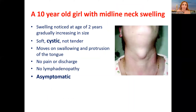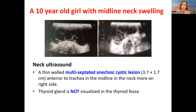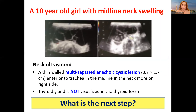Let me show you a ten-year-old girl who came with a midline neck swelling first noted at age two — cystic, soft, not tender, moves on swallowing and protrusion of the tongue, no pain or discharge, no lymphadenopathy, totally asymptomatic. Thyroid function: TSH is high at 11.9, T4 is normal, antibodies negative. This is a case of subclinical hypothyroidism. The ultrasound revealed a multi-septated anechoic cystic lesion, and the thyroid gland was not visualized in the thyroid fossa.